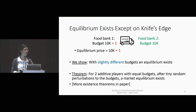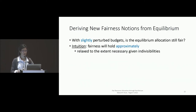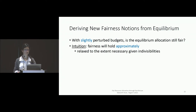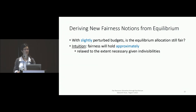We also have other existence theorems in the paper. Now that we've slightly perturbed the budgets to get equilibrium existence, this raises a new question: will fairness still hold? Intuitively, once all players have roughly the same budgets, fairness will hold approximately — which is what we were aiming for since we're dealing with indivisibilities. I'll show this on the next slide.